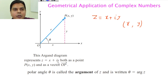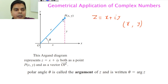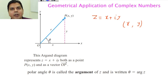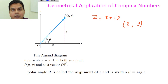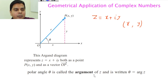This diagram is called the Argand diagram. It represents z = x + iy both as a point P(x, y) and as a vector OP. This vector has a length r, and an orientation or angular position measured with respect to the x-axis. This angular position theta is called the argument of z, written as θ = arg(z).